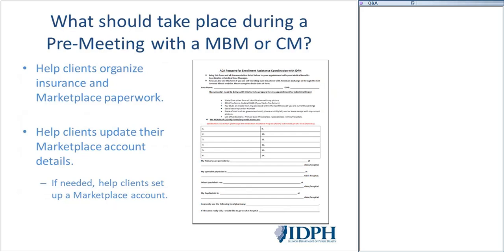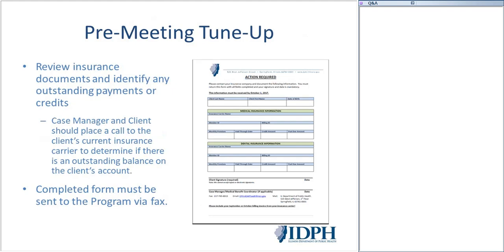The department has an ACA Task Force checklist for applicants and case managers, available within Provide Enterprise for all users. This form helps organize the client's Marketplace or Medicare paperwork, including who their medical providers are, what medications they take, their current plans, and what documents they need for open enrollment such as financial records. It's important to have a conversation about their tax preparation. During the pre-meeting tune-up, go over the Action Required document and assist the applicant if needed.